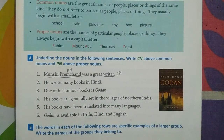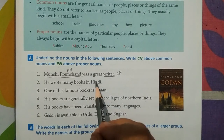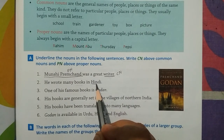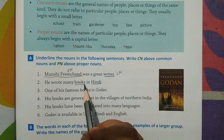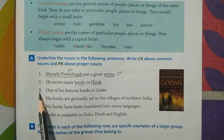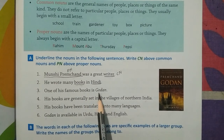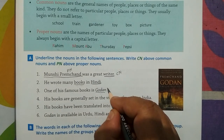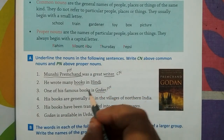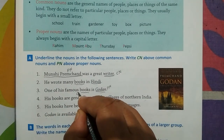'He wrote many books in Hindi.' Hindi is a proper noun; books are a common noun. Number three: 'One of his famous books is Godan.' Godan is a proper noun — PN. And 'books' is CN.